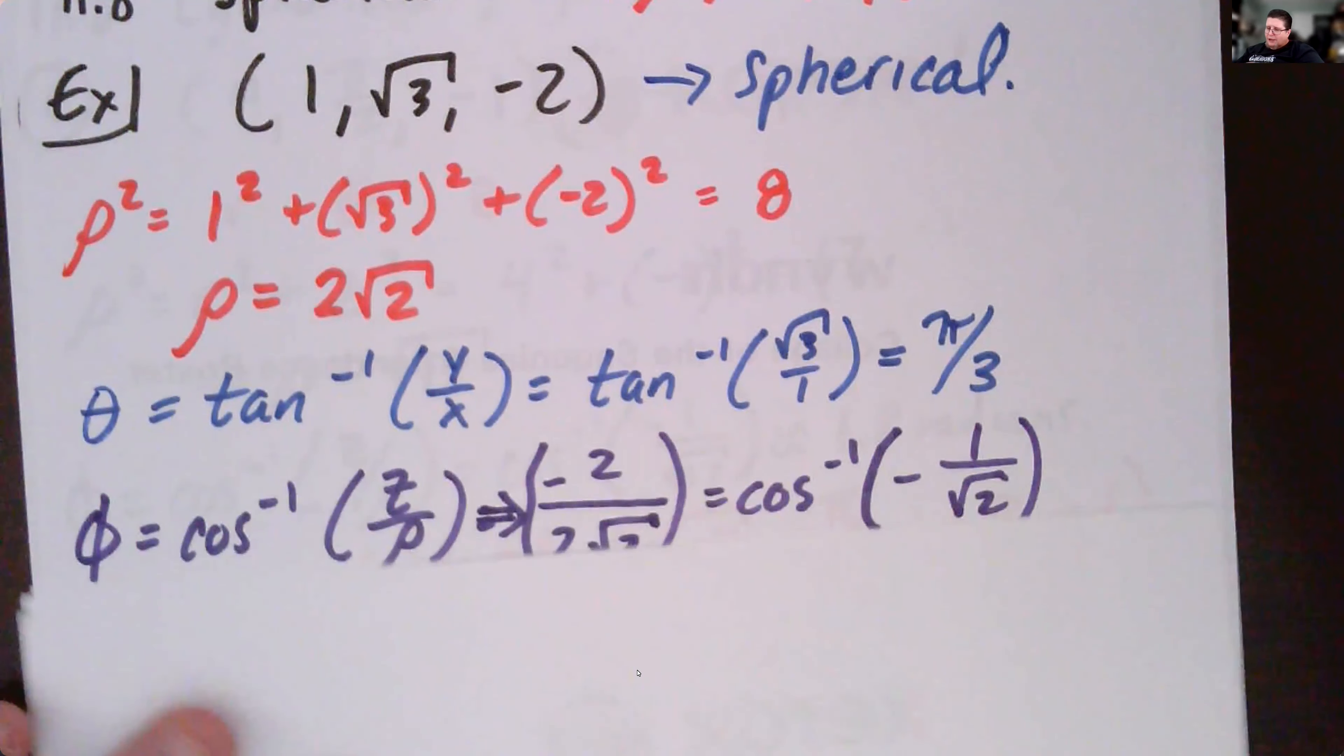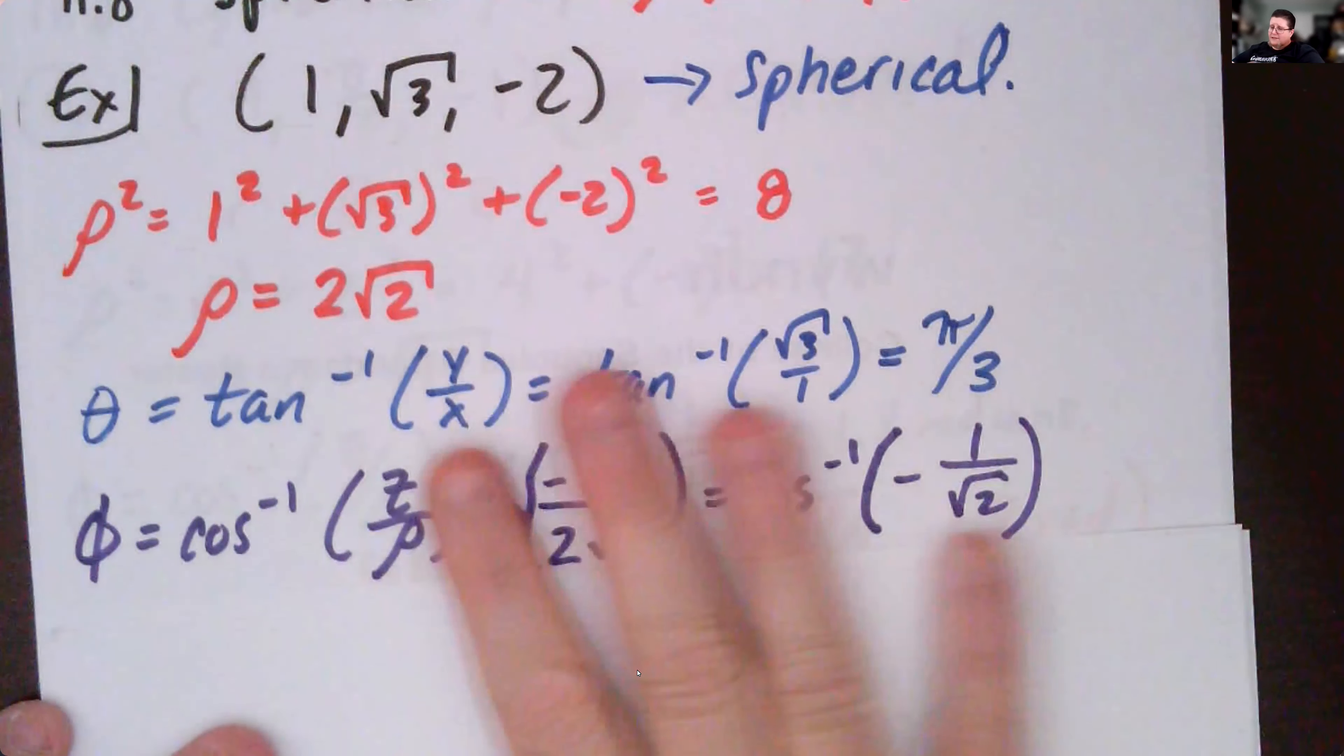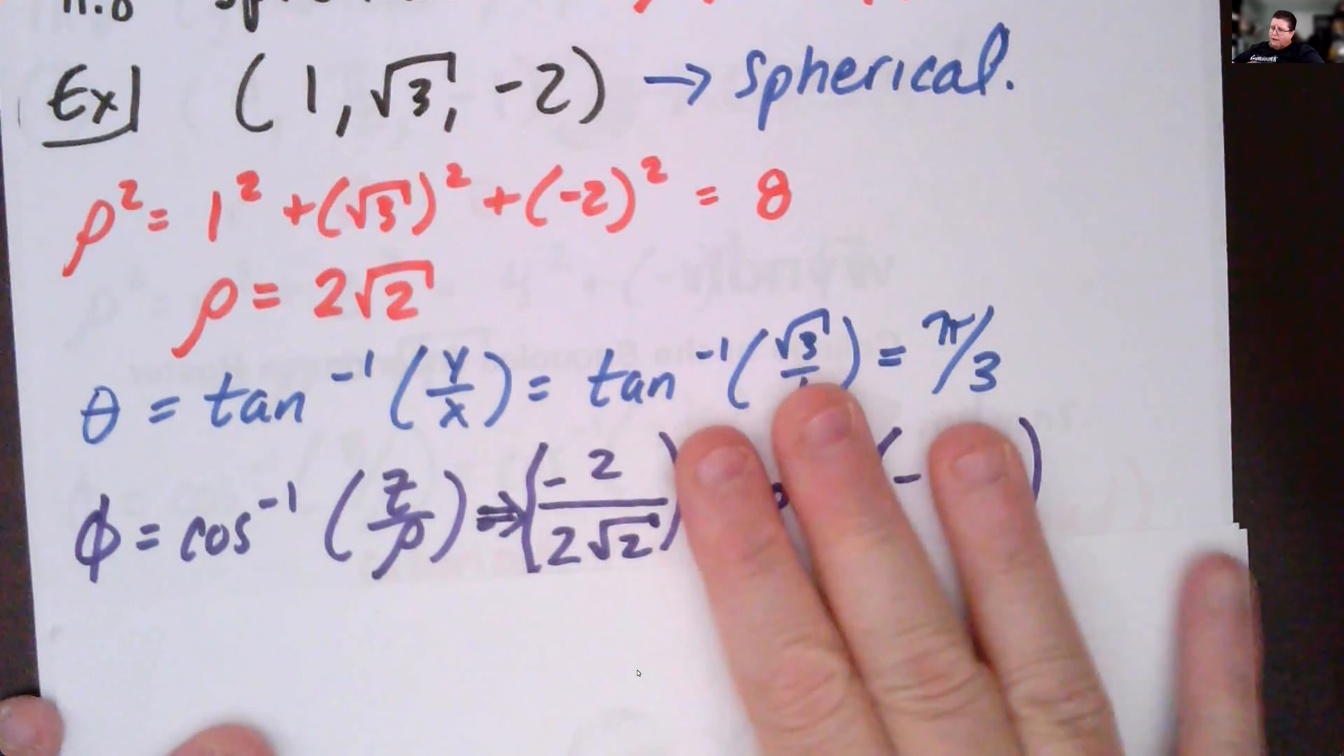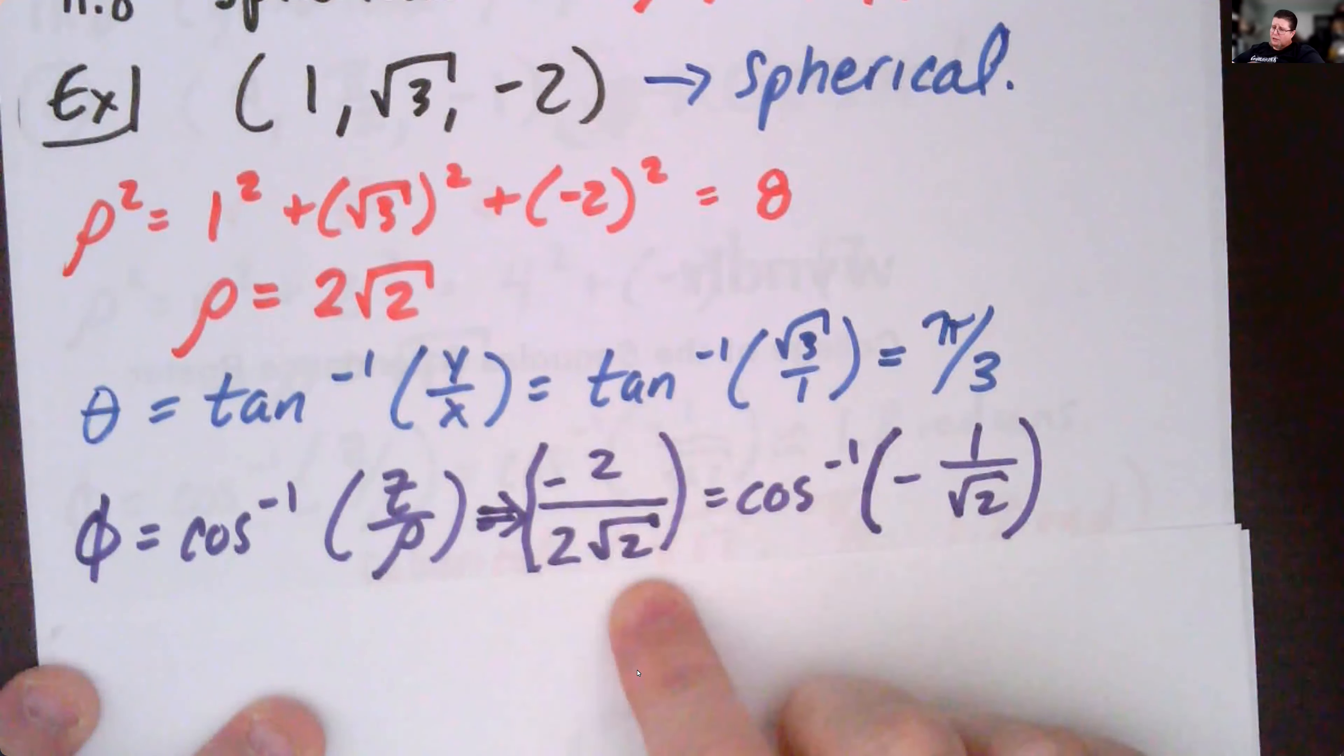And when we look at phi, phi equals cosine inverse of z over rho. If I plug in z over rho, I've got negative two over two root two. I'm left with phi equals cosine inverse of negative one over square root of two.